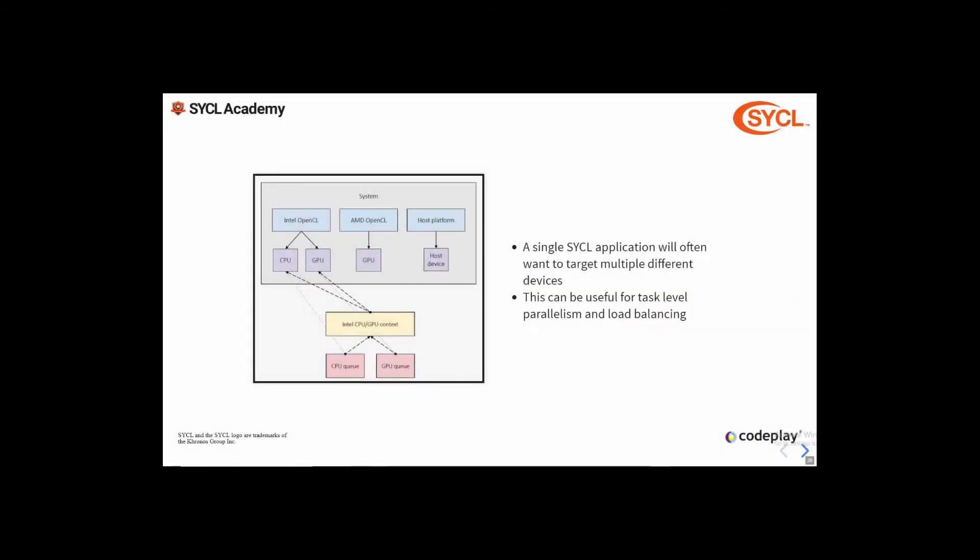A SYCL application will often want to target multiple devices, which can be useful for task-level parallelism and load balancing. Here we have two queues — one for the CPU and one for the GPU — both associated with the same context. This is important for being able to communicate efficiently between the two devices.